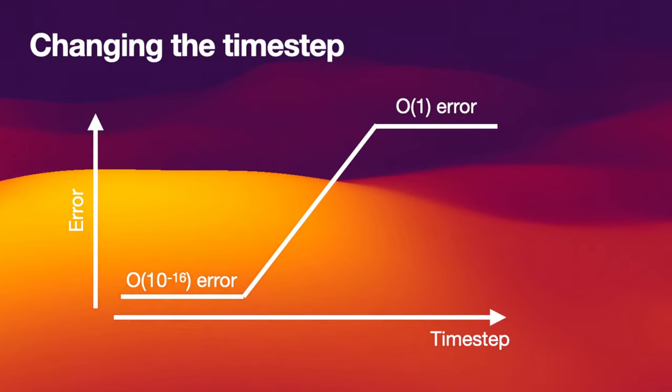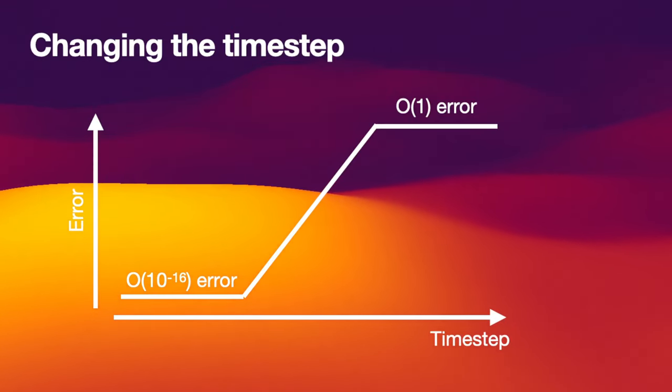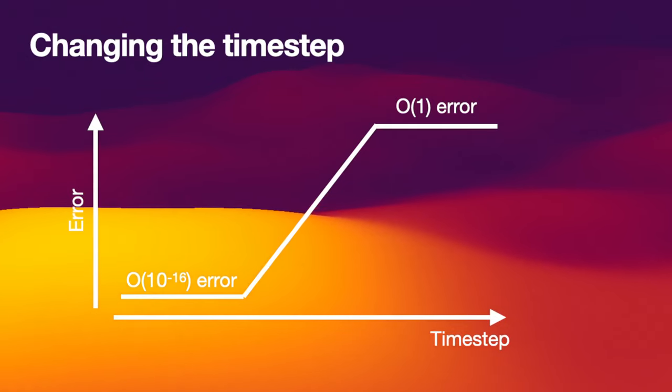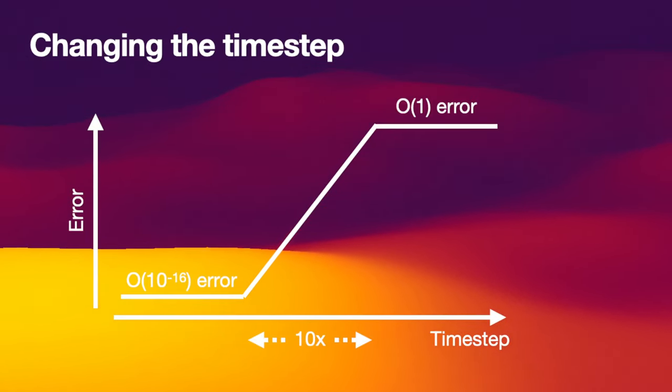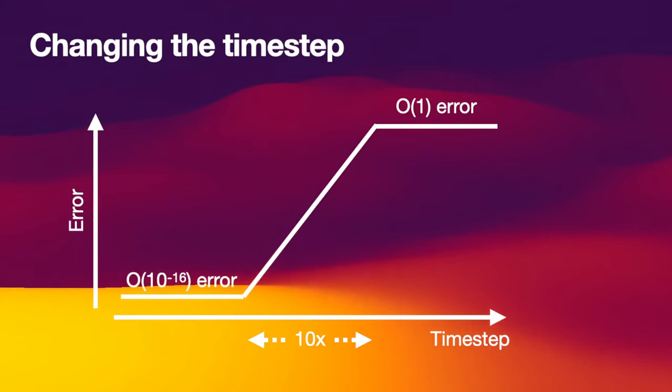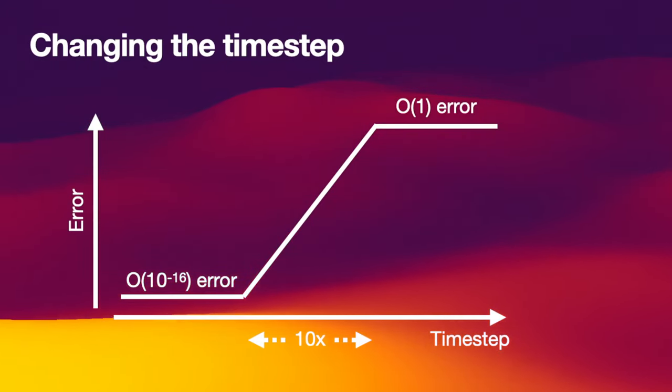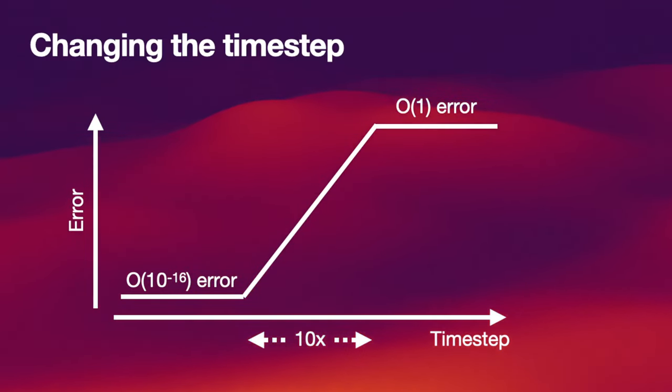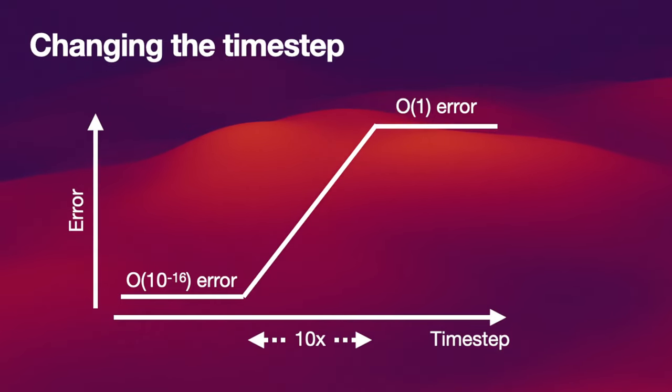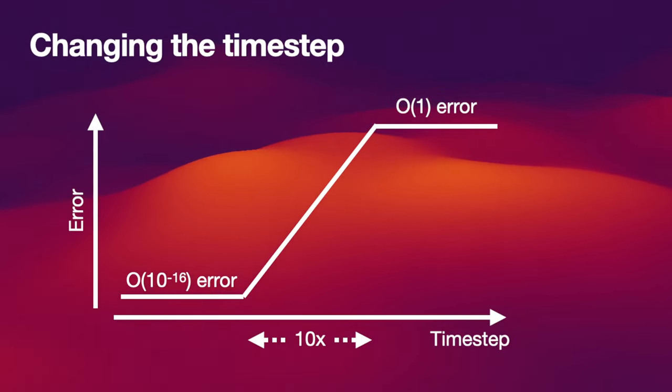So, these two limits really limit what you can do with IAS15. And because it's such a steep slope in between, it's a 15th order slope, the amount of change you need in the time step to get a large change in the error is very small. A factor of 10 in the time steps will get you from machine precision to an almost order unity error. That's because 10 to the power of 15 is approximately 10 to the 16. So, small change in time steps will lead to a large error.